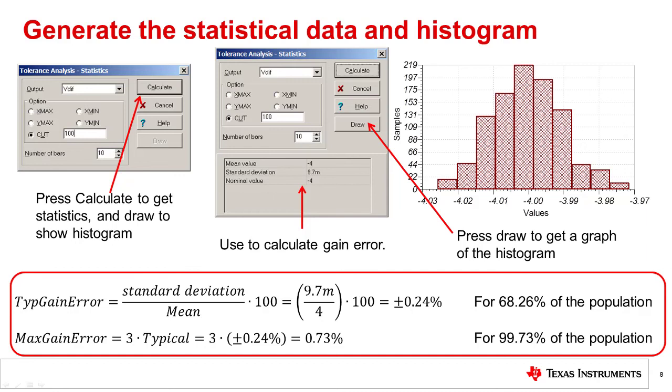A worst-case estimate can be set using the statistical factors introduced earlier. For example, multiplying the typical gain error by 3 sets a maximum limit that will include 99.73% of the population.